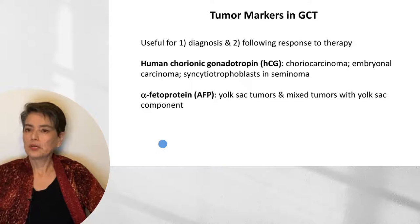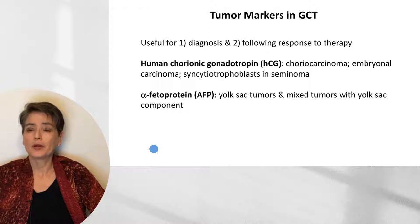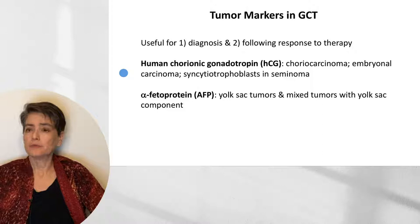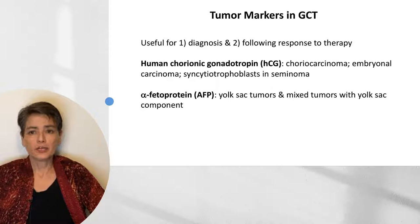Tumor markers in germ cell tumors can be useful not only for diagnosis, but also in following response to therapy. The two we will look at are human chorionic gonadotropin (HCG) and alpha-fetoprotein (AFP). HCG is markedly elevated in choriocarcinoma and can also be elevated in embryonal carcinoma and in seminomas that have a syncytiotrophoblastic component. By contrast, alpha-fetoprotein is seen in yolk sac tumors, as well as in mixed tumors with a yolk sac component. We will not see AFP elevated if there is no yolk sac tumor.